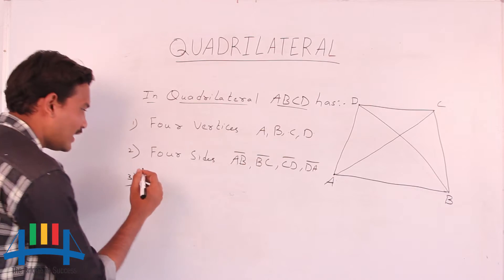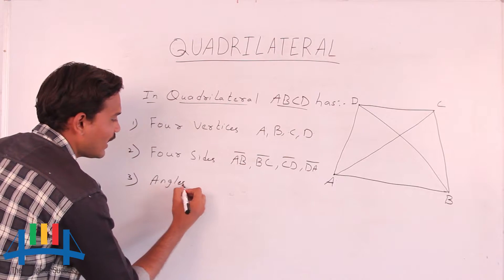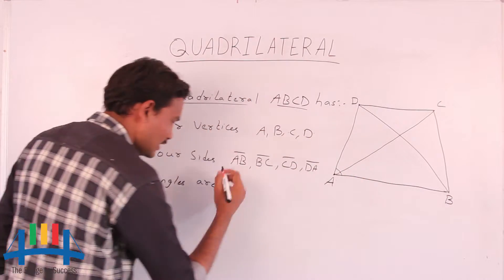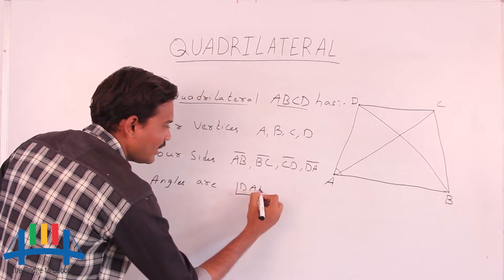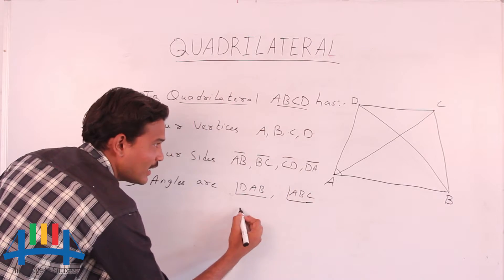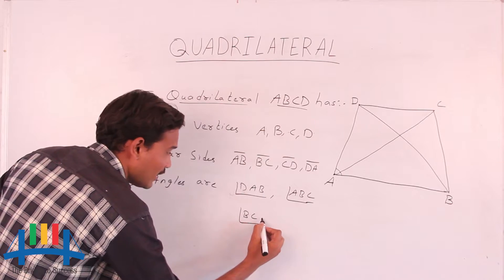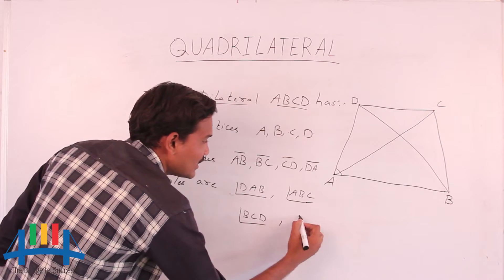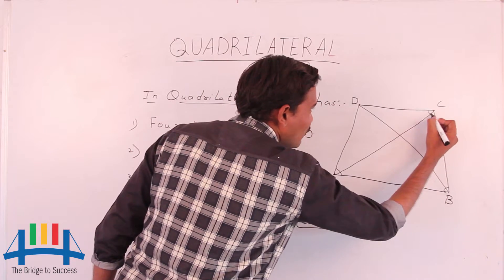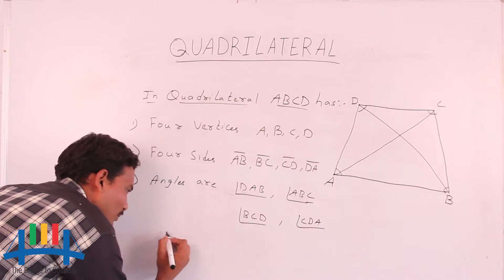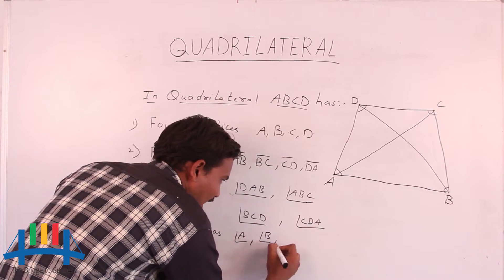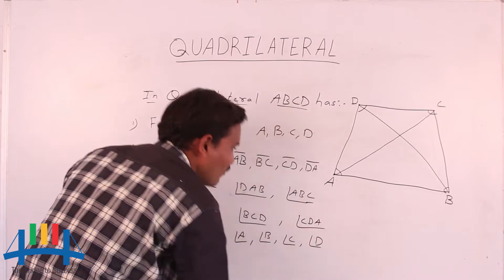Now we look at the angles. In quadrilateral ABCD, the first angle is angle DAB, represented near vertex A. The second angle is angle ABC, the third angle is angle BCD, and the fourth angle is angle CDA. These four angles are denoted in short form as angle A, angle B, angle C, and angle D.